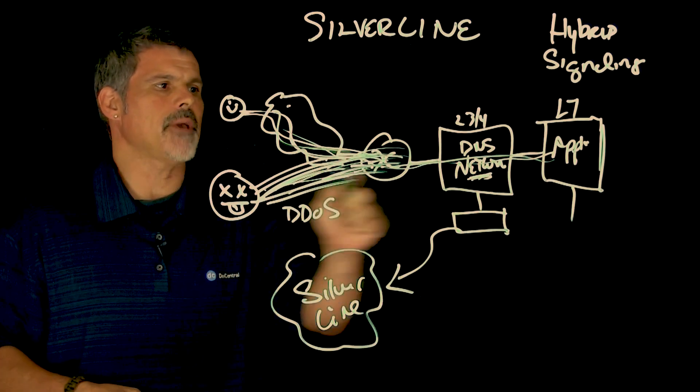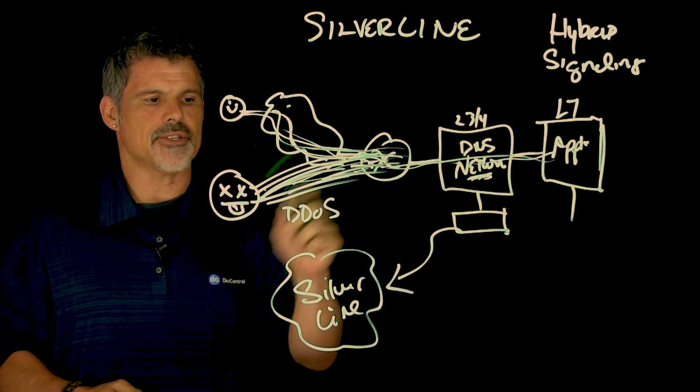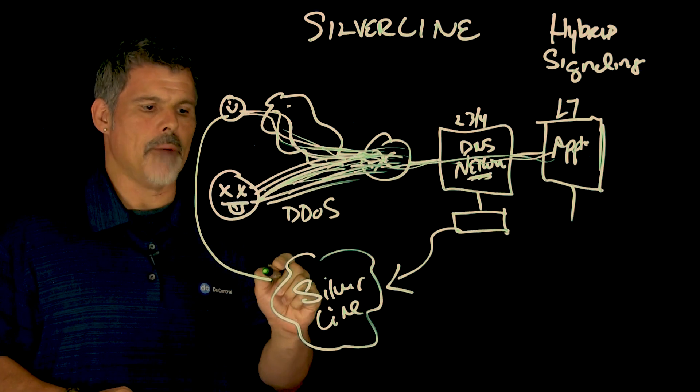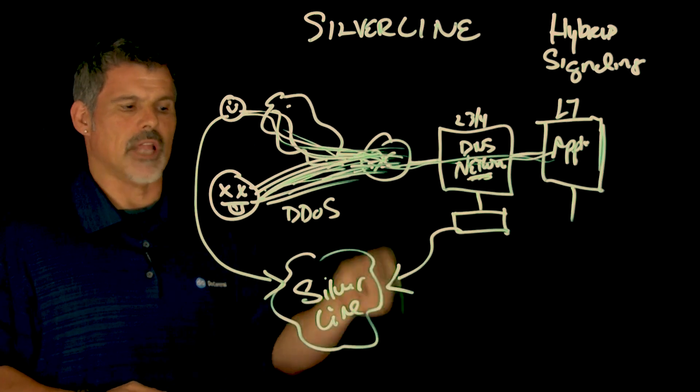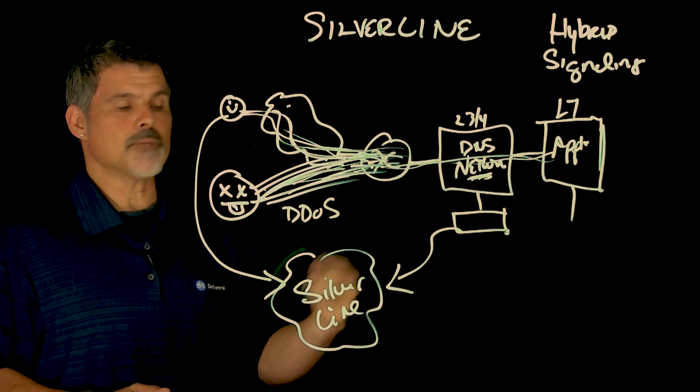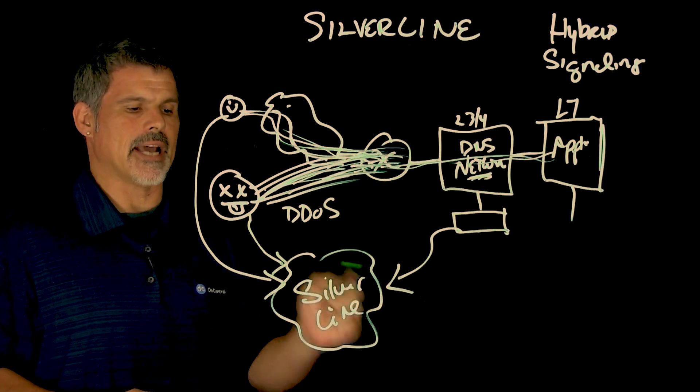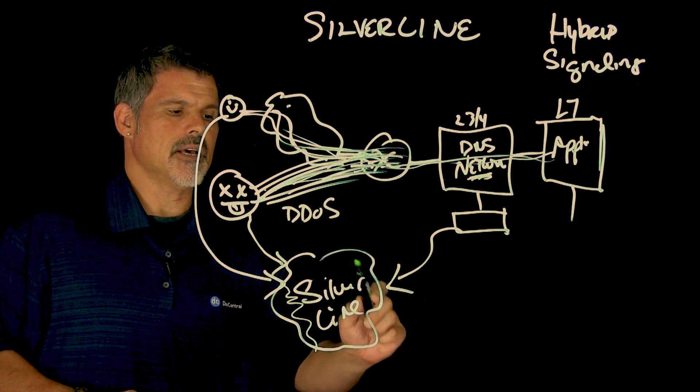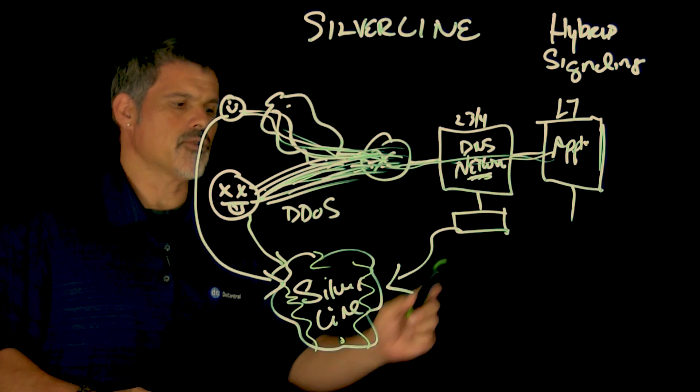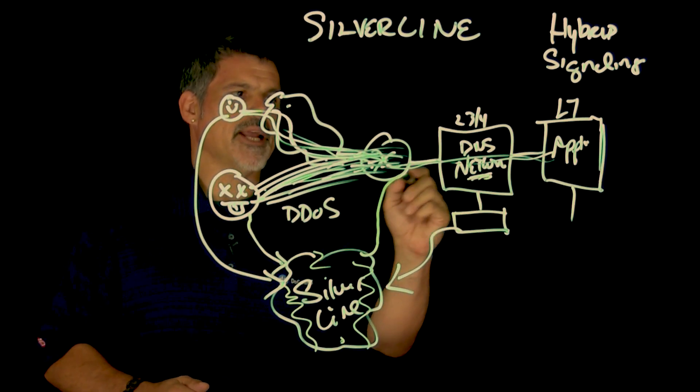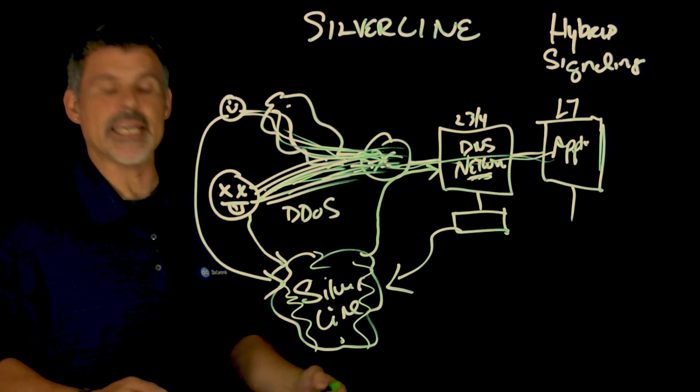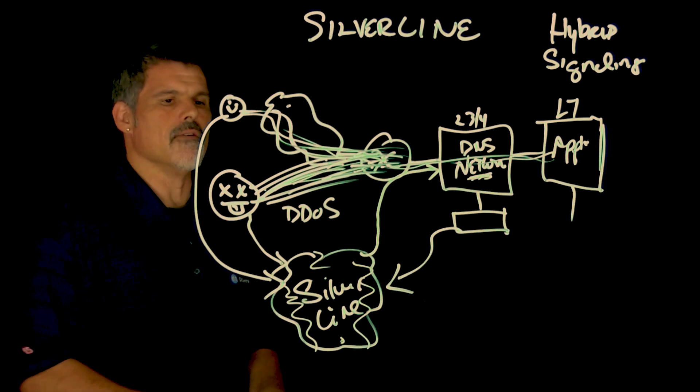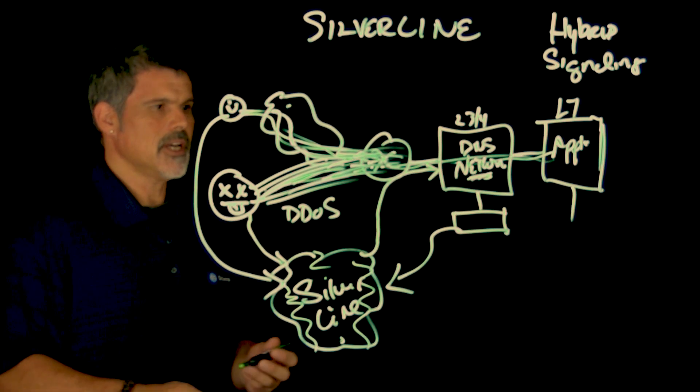And then Silverline can then take over the traffic. And so instead of coming direct to you guys, it would now be redirected through the Silverline cloud-based platform, and even this bad guy. And this would then scrub the traffic and then bring it back to you clean, without all of the bad stuff incorporated.